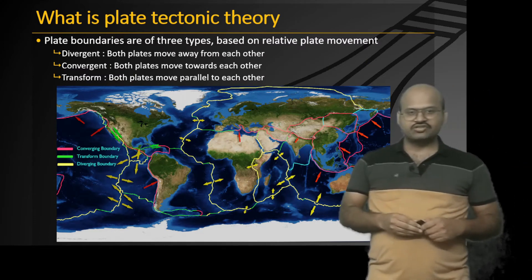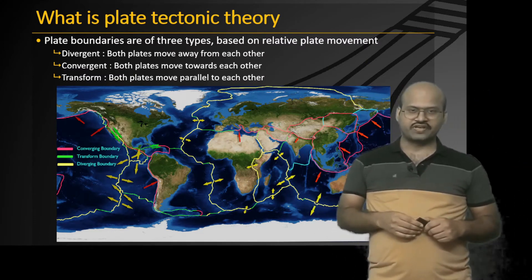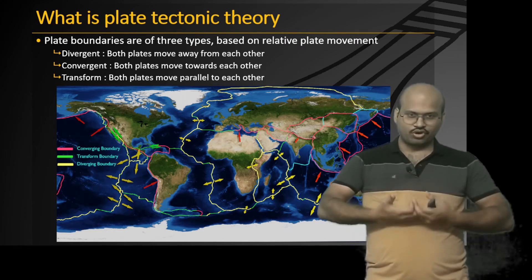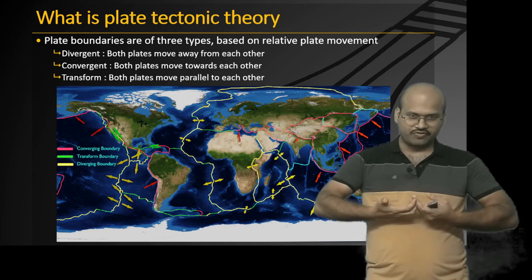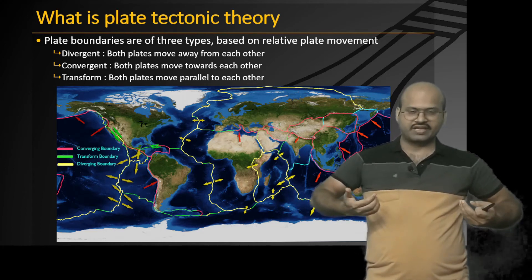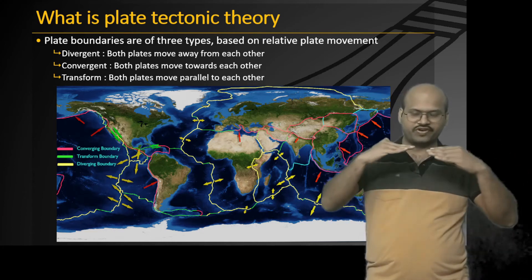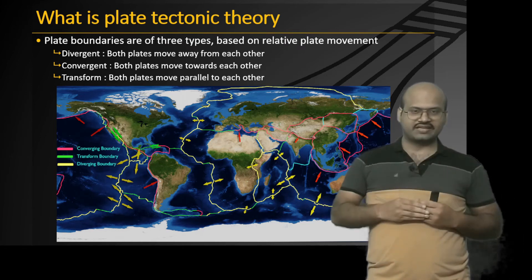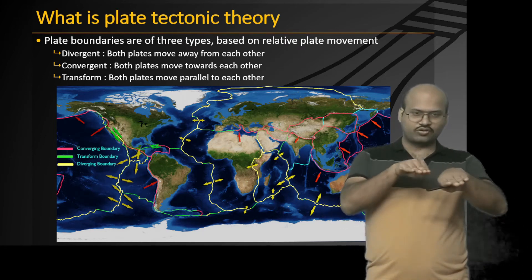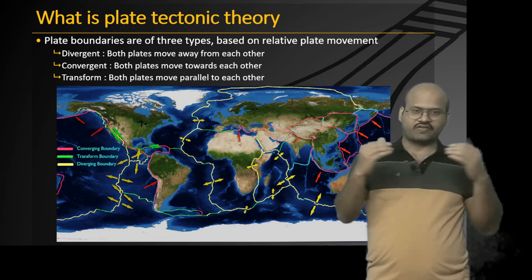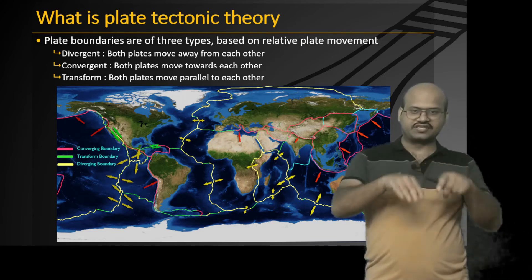Based on the type of movement at the boundaries, we can classify boundaries into different types. The first is the divergent boundary, where both plates move away from each other. Then there is the convergent boundary, where both plates move towards each other. Finally, there is the transform boundary, where the plates move parallel to each other — neither towards nor away, but sliding alongside each other.